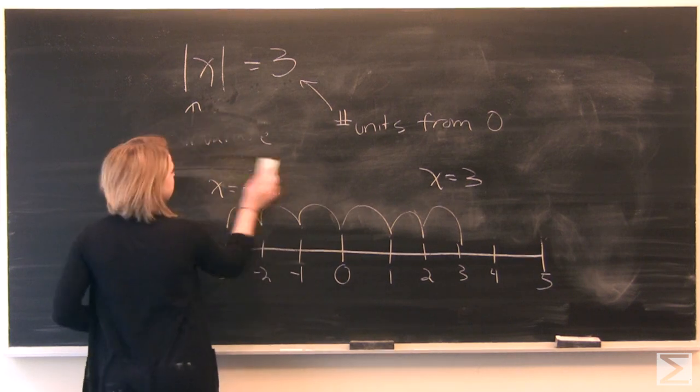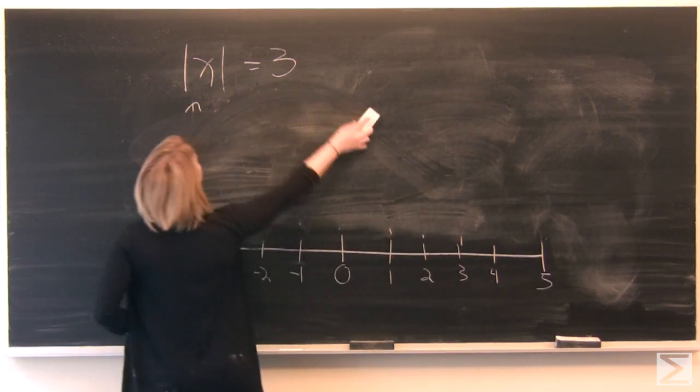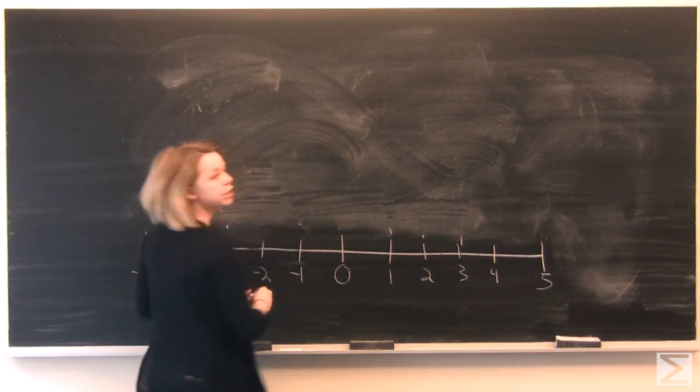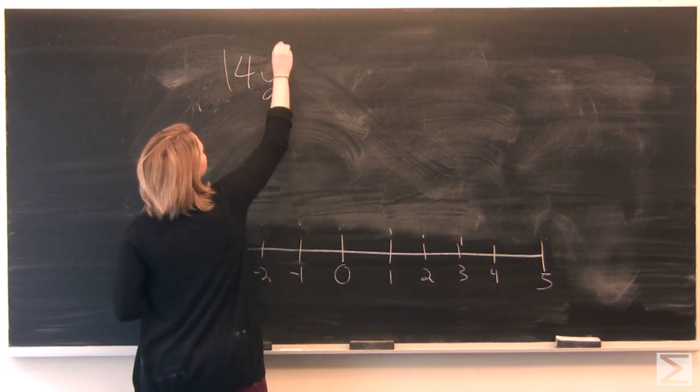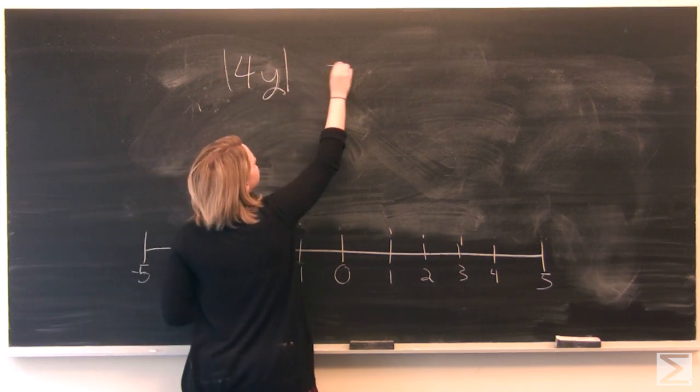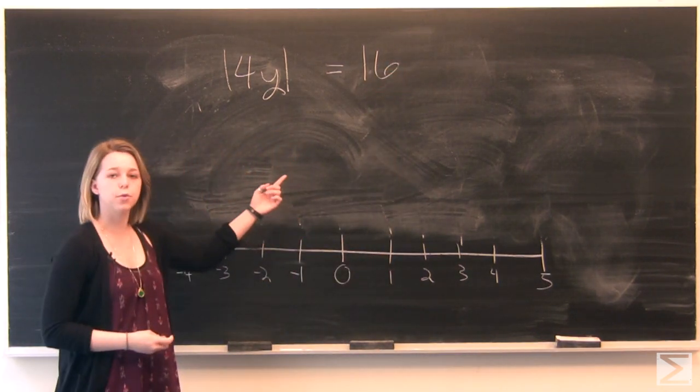You can also see absolute value equations written like this. We'll have 4y, the absolute value of 4y is equal to 16 units away from 0.